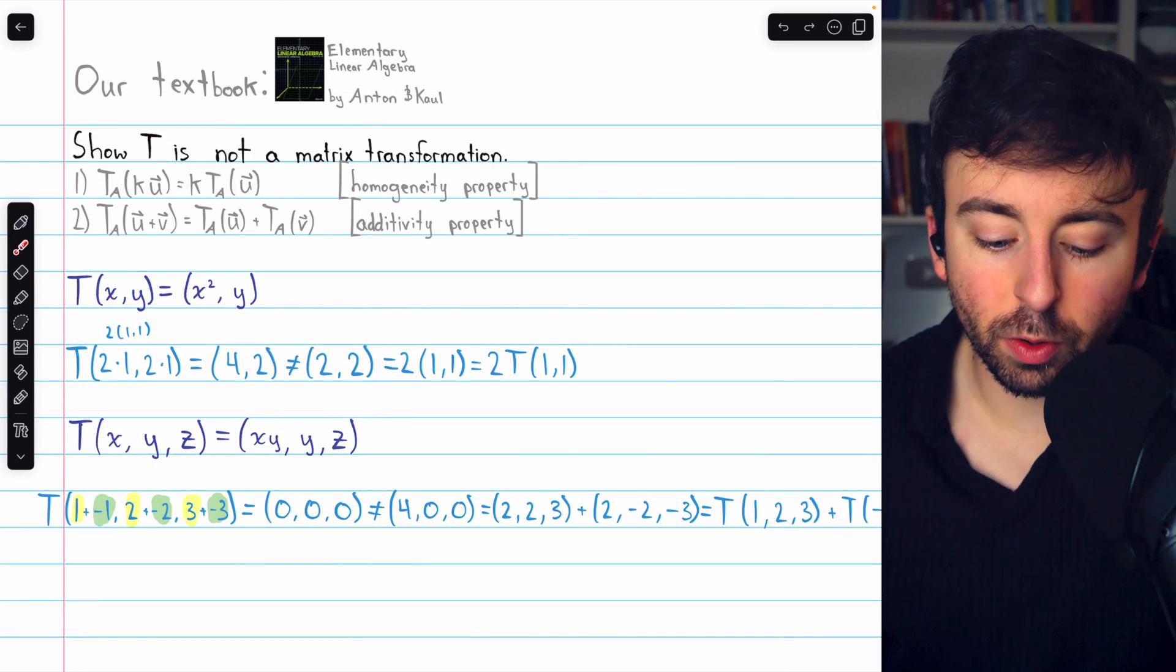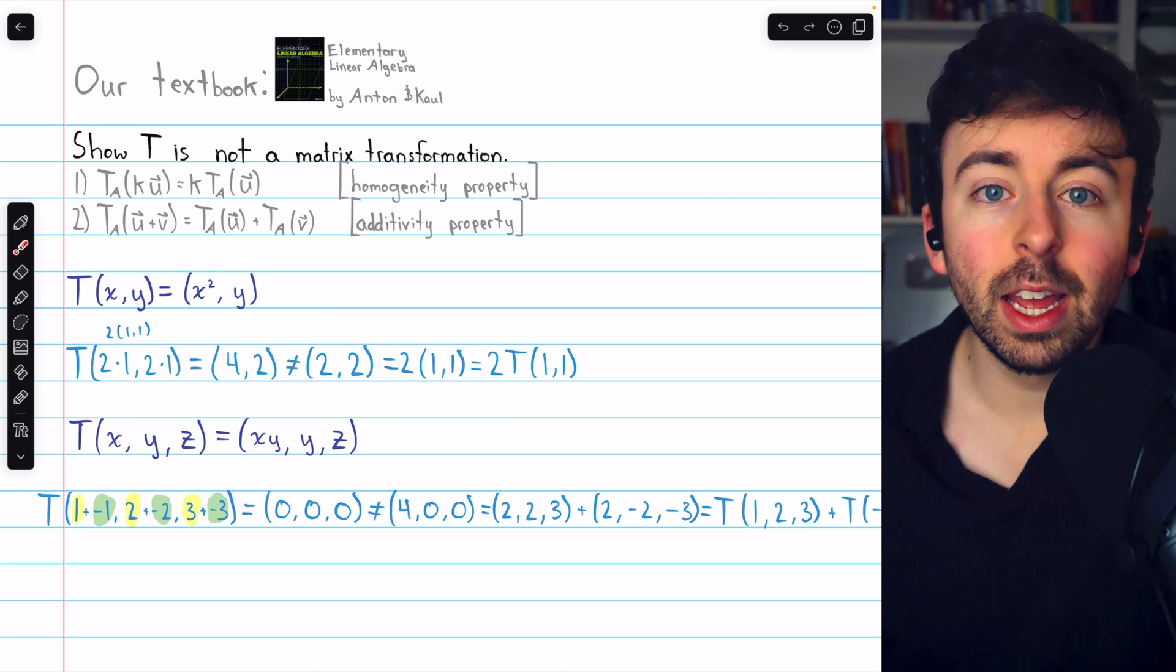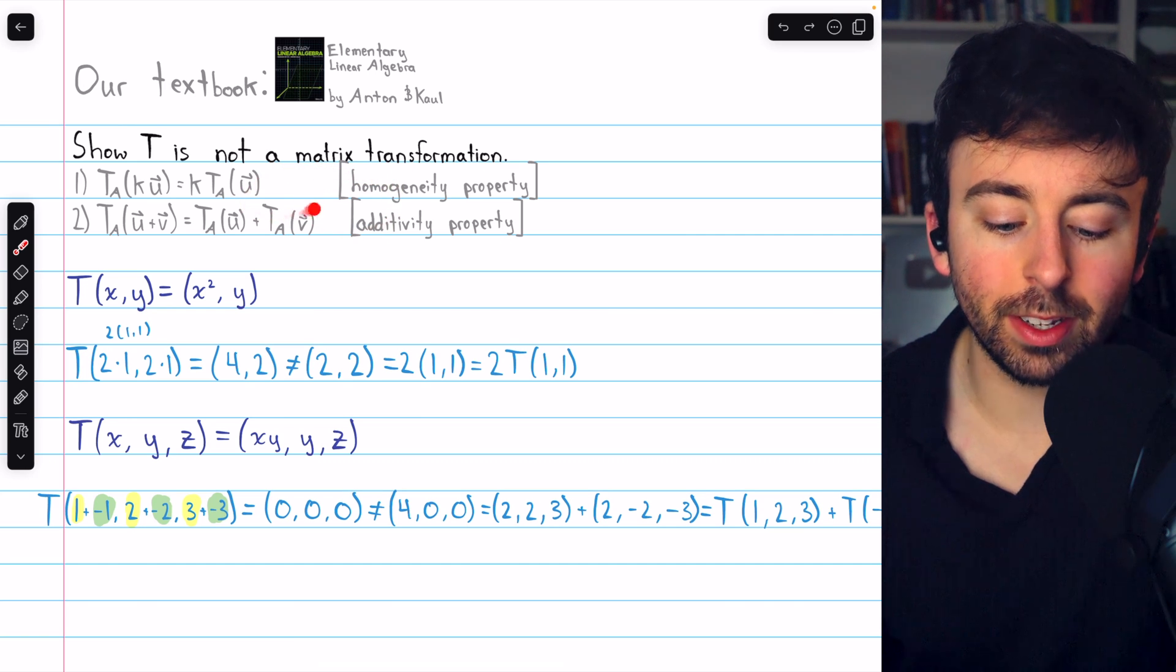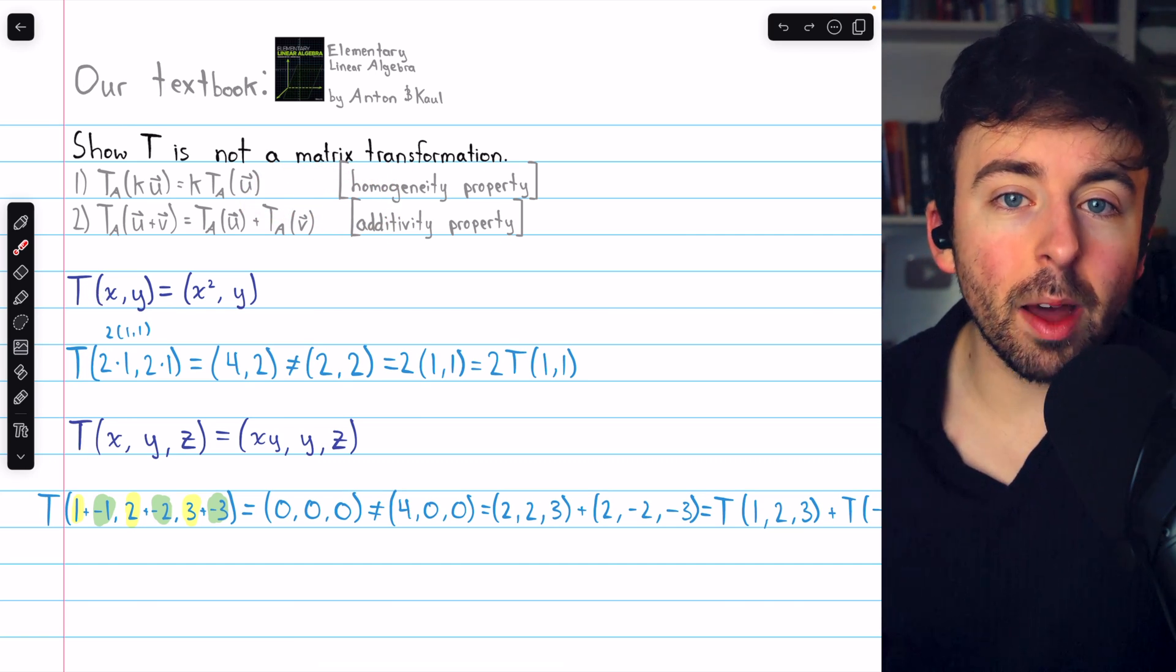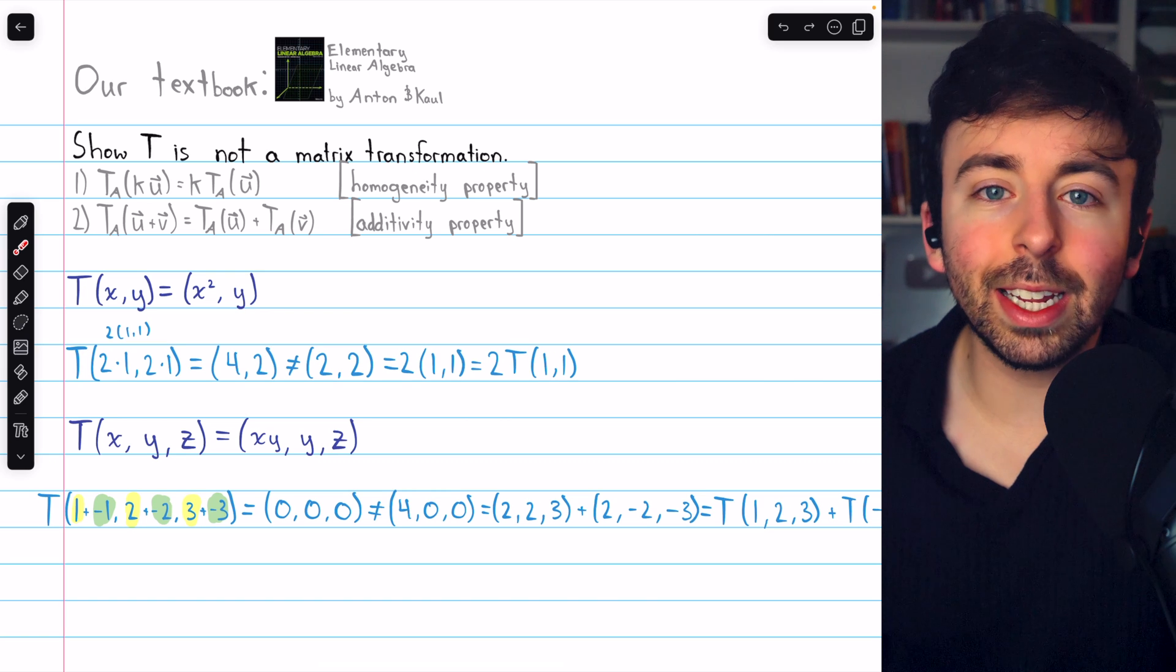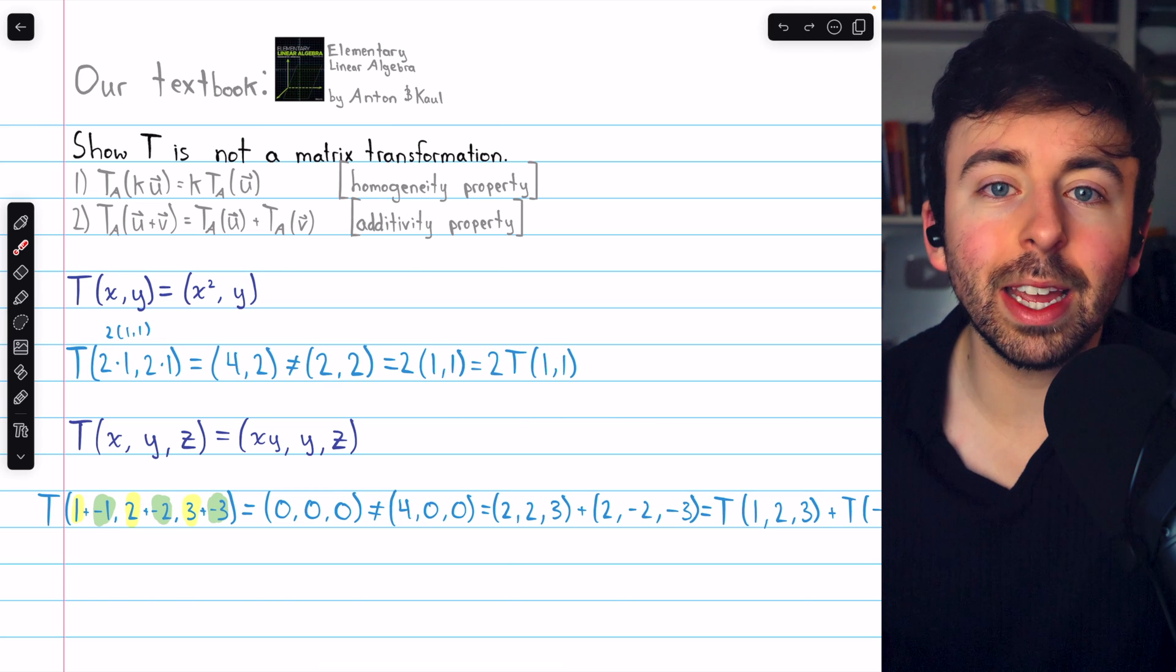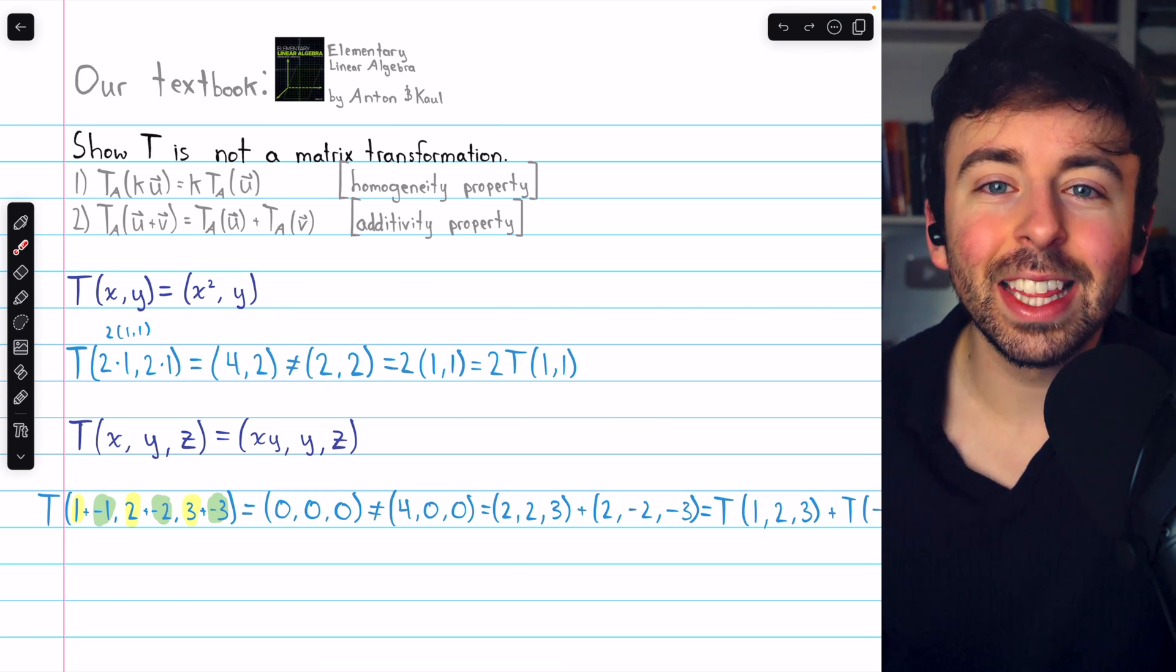And that's how you can take the equation of a transformation and show that it is not a matrix transformation. As we know, a matrix transformation has to satisfy these two properties, and neither of these transformations did. Let me know in the comments if you have any questions, and if you find my Linear Algebra videos helpful, please consider supporting what I do by joining as a channel member or pledging on Patreon for exclusive and early access to select videos, or you can make a one-time donation on PayPal. Any help is greatly appreciated. Thanks for watching.